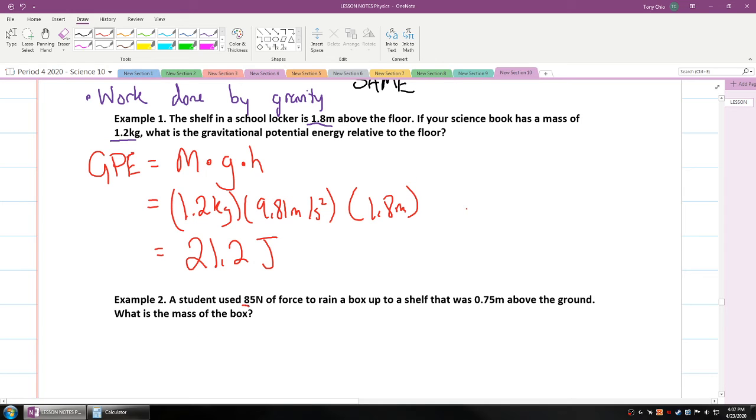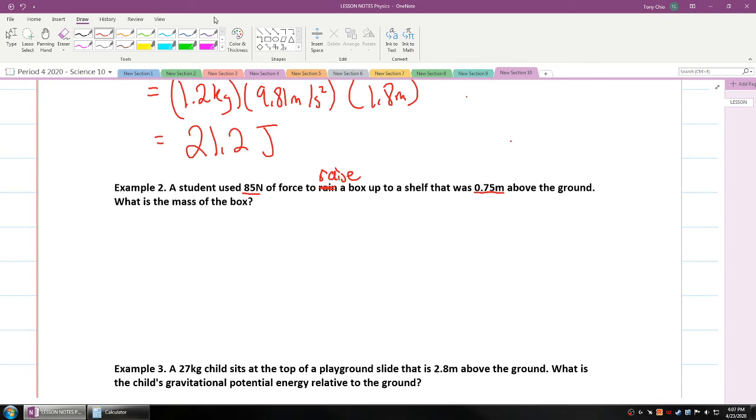Let's take a look at the next example. A student used 85 newtons of force to raise a box up to a shelf that was 0.75 meters above the ground. What is the mass of the box? Well, let's take a look. We know that gravitational potential energy is equal to mass times gravity times the height. Well, we have the height here. But what is 85 newtons? 85 newtons, in this case, is the force. So in this question, because it's the force, we actually cannot use this formula. It doesn't actually work because we're actually missing our gravitational potential energy.